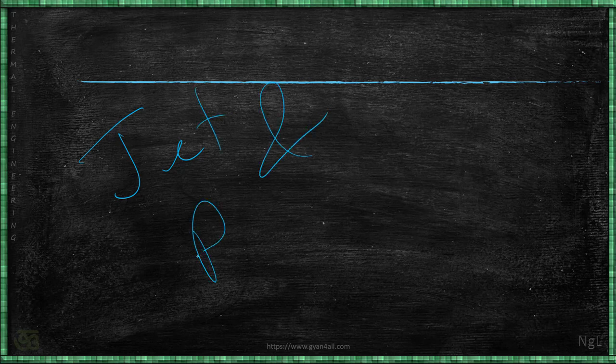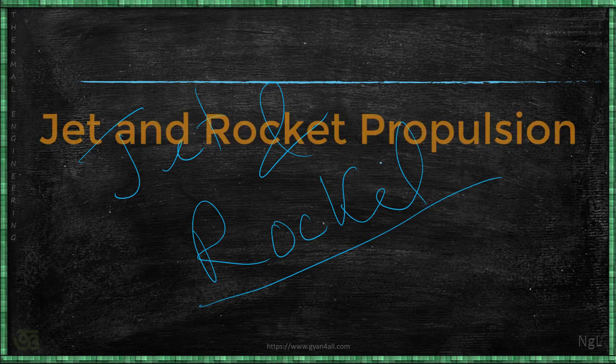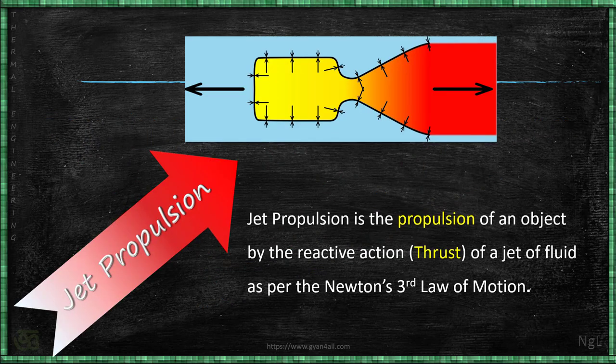Jet and rocket propulsion covers how we can propel a fighter jet or a rocket from the Earth's surface. To understand this, we only need to know the basics of how it works. The principle of the gas turbine is used, since all these systems contain a gas turbine. Jet propulsion is the propulsion of an object by reactive action, which applies Newton's third law of motion, and that reactive action is called thrust.